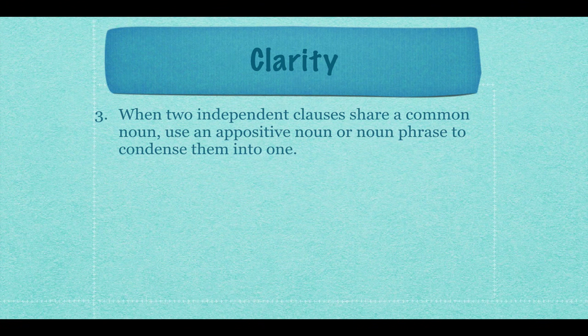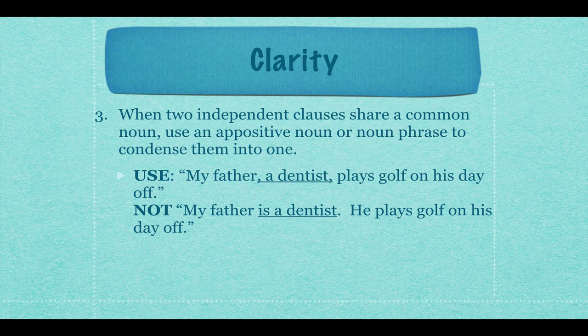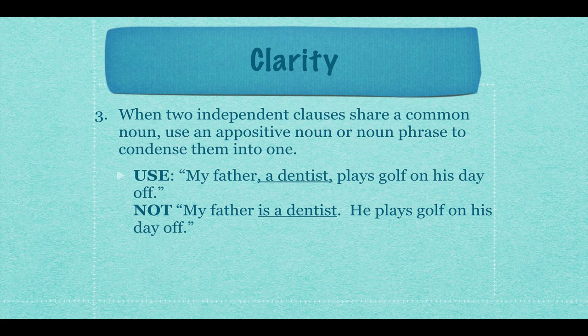For clarity, when two independent clauses share a common noun, use an appositive noun or noun phrase to condense them into one. The idea is that when you have multiple sentences, try to combine them, especially if they're saying the same thing. For example, use 'my father, a dentist, plays golf on his day off.' Don't write two separate sentences: 'My father is a dentist. He plays golf on his day off.' Both sentences rely on 'my father,' so we can combine them into one complex sentence that is clearer and gets the point across faster.